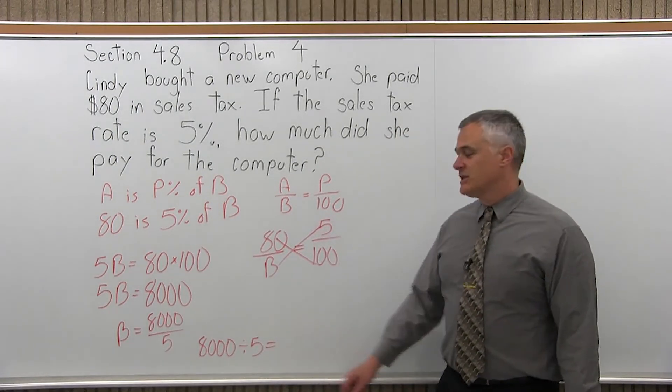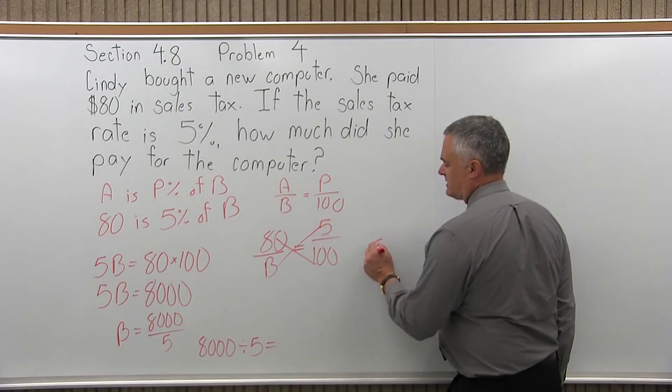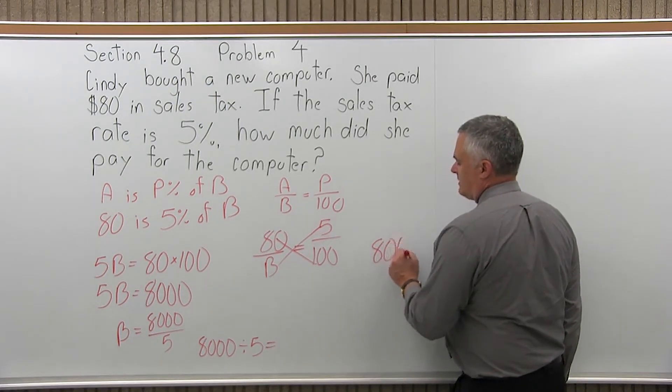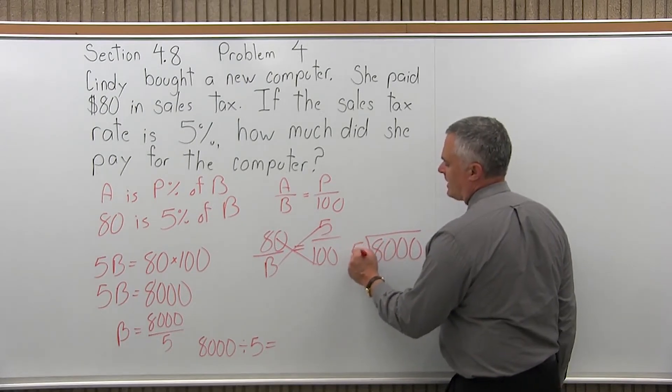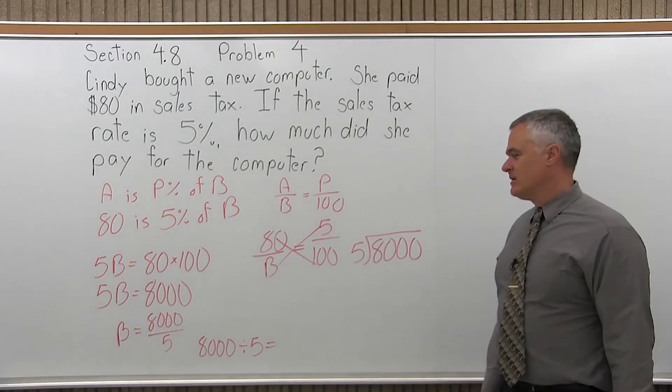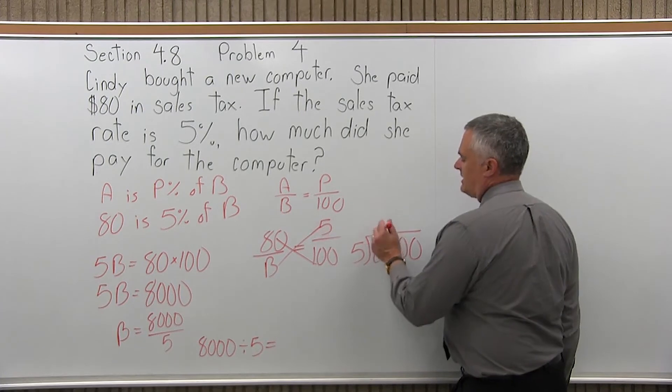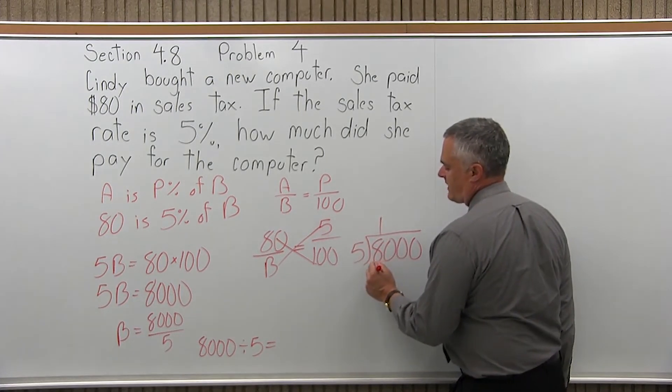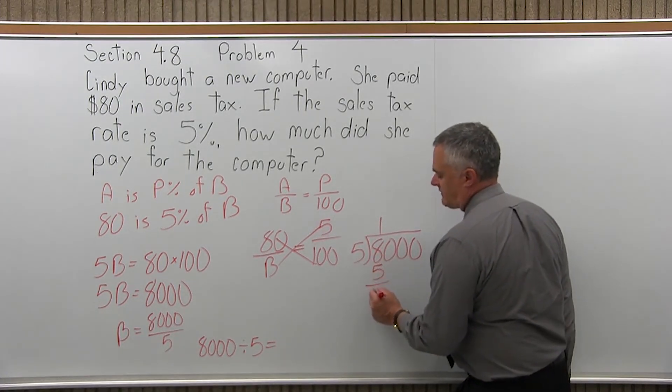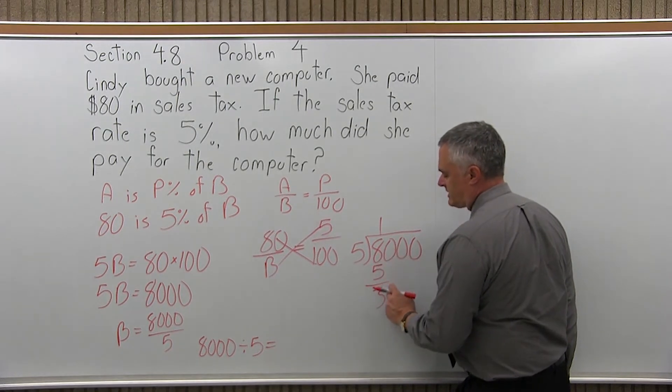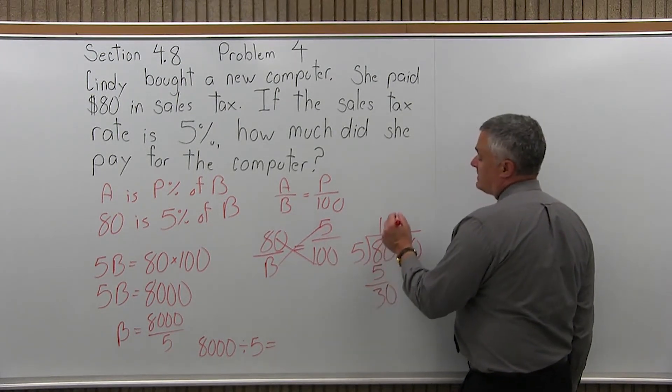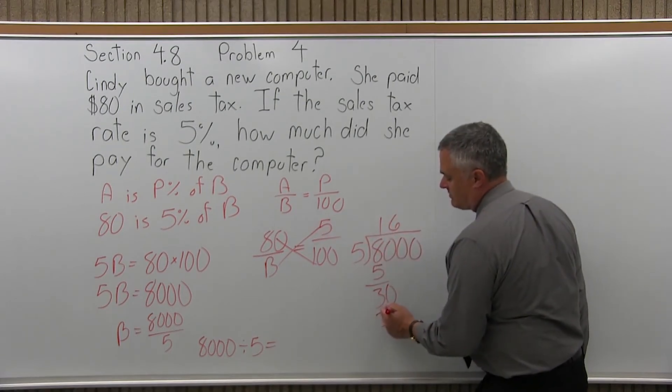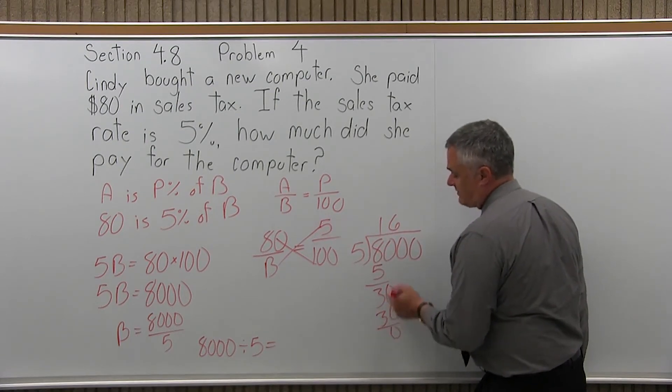Now, if your math teacher doesn't let you use a calculator, just do it out the long way. It's not that bad. So I have 8,000. How many times does 5 divide into it? Well, 5 divides into 8 only once. 1 times 5 is 5. 8 minus 5 is 3. Then you bring down the next digit, which is a 0. And now 5 goes into 30 exactly 6 times. 6 times 5 is 30. 30 minus 30 is 0.